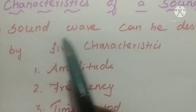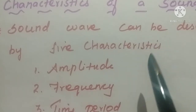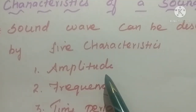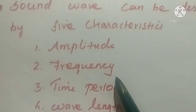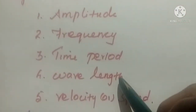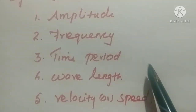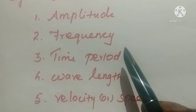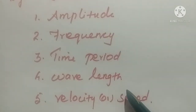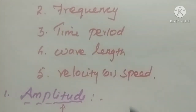Next we are going to learn what are the characteristics of a sound wave. There are five characteristics. The first one is amplitude. Next is frequency. Third one is time period. Next one is wavelength. And the last one is velocity or speed. These are the five important characteristics of a sound wave. We are going to learn them one by one.